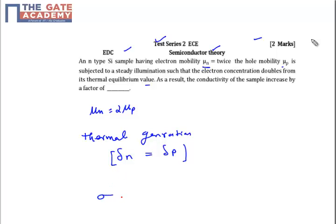So my σ1, my old conductivity will be q n μn. That is before the thermal generation, my conductivity will be this much.